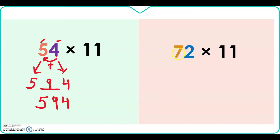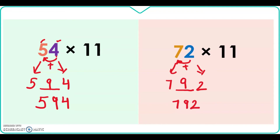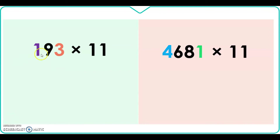Let's solve another one. The question is 72 times 11. First step: write the first digit as it is and the last digit as it is, leaving a space between them. Then add the two digits: 7 plus 2 is 9, so we write 9 in the space. Our answer is 792.